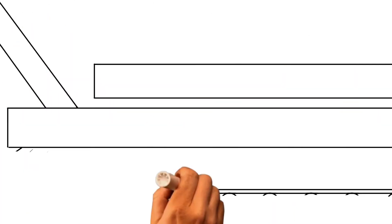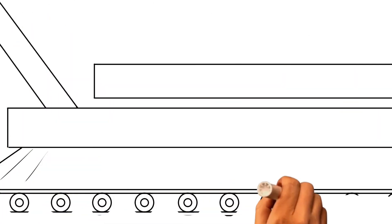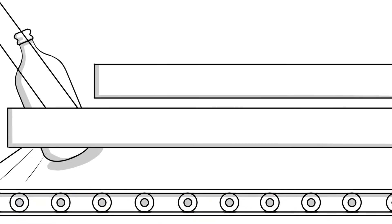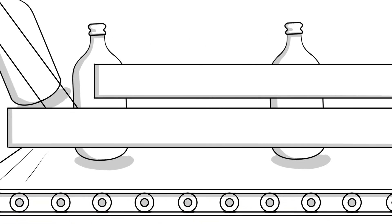The part is either dropped directly onto a conveyor when the mold opens or is temporarily held on the blow pins until a robot picks it up and moves it to a conveyor.